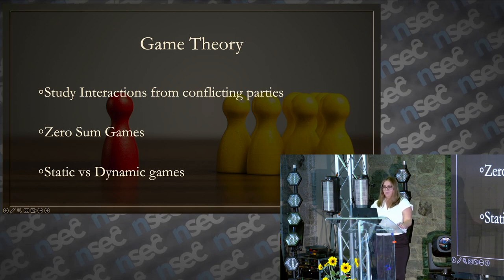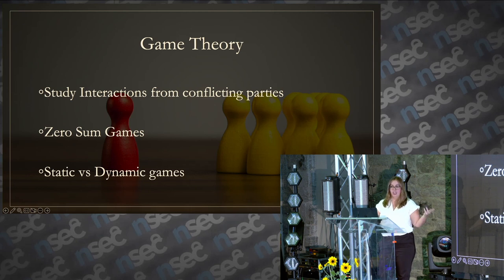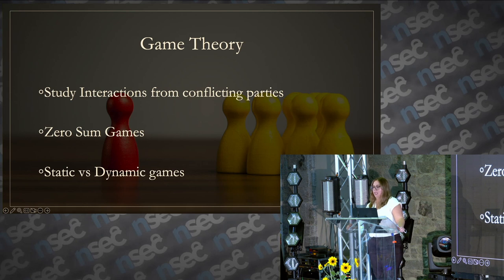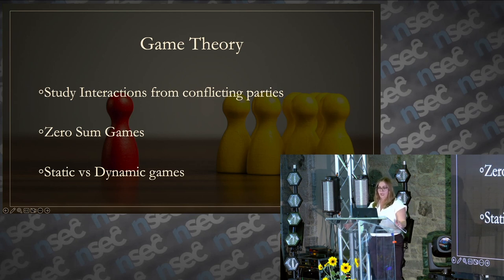Dynamic games are different because they're sequential — one move after the other. Think of chess as a dynamic game. In a dynamic setting you have more time to plan and prioritize certain strategies over others, and you see what the other player is doing. You take for granted that you both know the end game of the other, because you're playing chess.